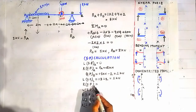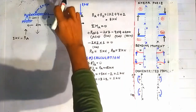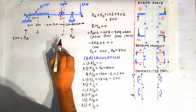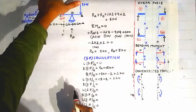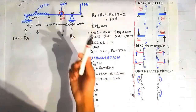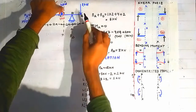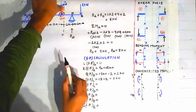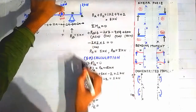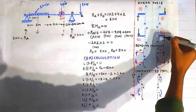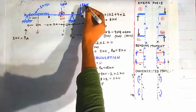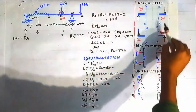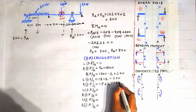For shear force on the right side of point C, we construct a section through the right side of point C. Looking on the right side: RD = 5 kN causes a negative shear force of −5 kN, and the 2 kN force causes a positive shear force of +2 kN using the sign convention for forces on the right-hand side. So the shear force on the right side of point C is −5 + 2 = −3 kN.